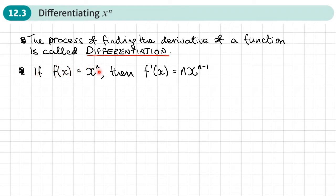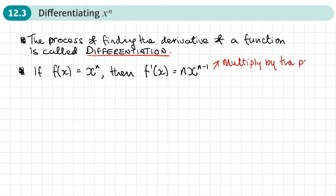If f of x equals x to the power n, then its derivative, f dash of x, is equal to n times x to the power n minus 1. So wherever the power is, we multiply by the power — that's where the n ends up at the front — and then we subtract 1 from the power.